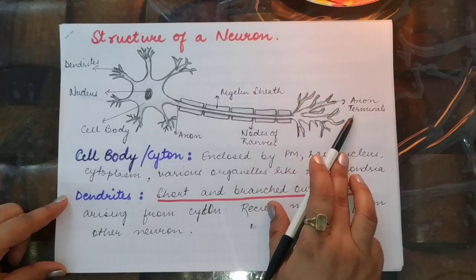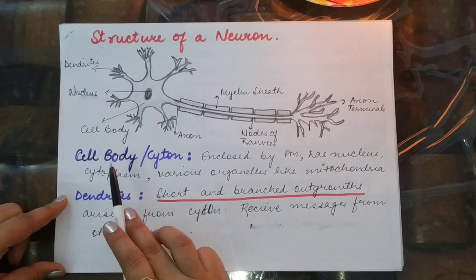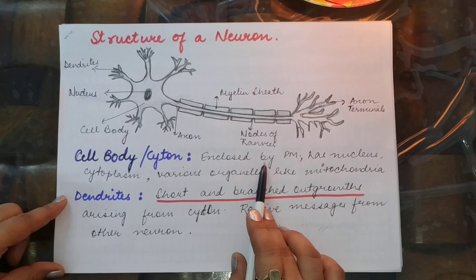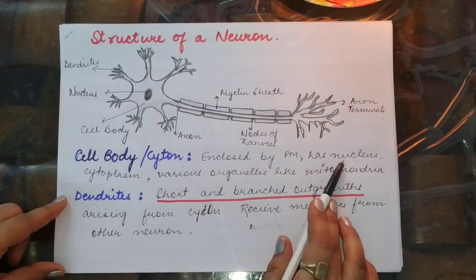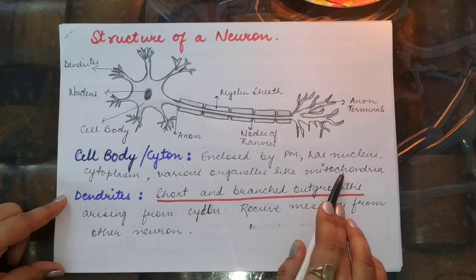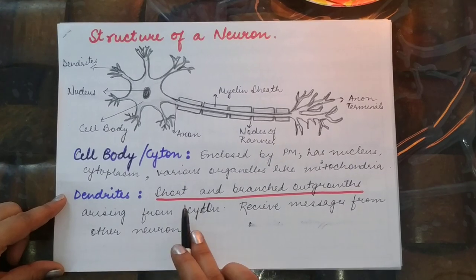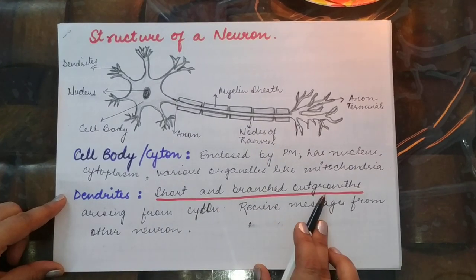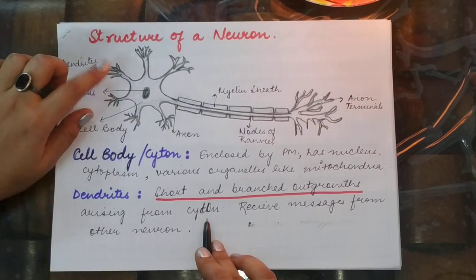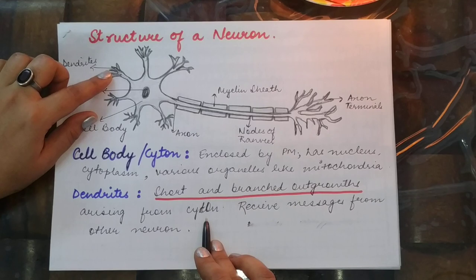Where the axon ends, there are certain terminals called axon terminals. The cytone is enclosed by a plasma membrane, has a nucleus, cytoplasm, and various organelles like mitochondria. Dendrites are short, branched outgrowths arising from the cytone, and this is the part of the neuron which receives messages.